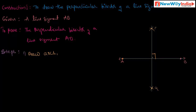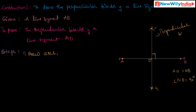This line PQ is perpendicular to AB and it bisects the line segment AB into two equal parts. If O is the bisecting point, then AO is equal to OB, and angle POB is equal to 90 degrees. This is called the perpendicular bisector.